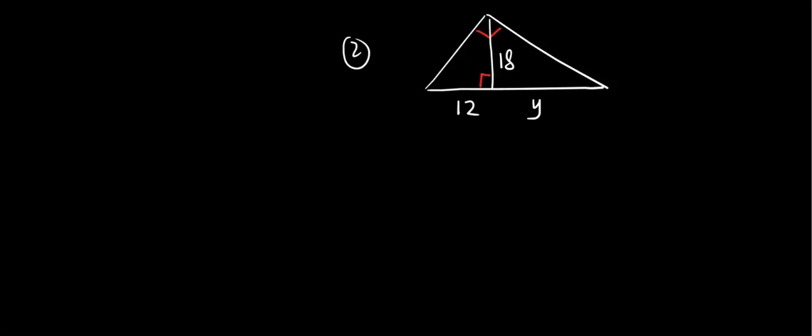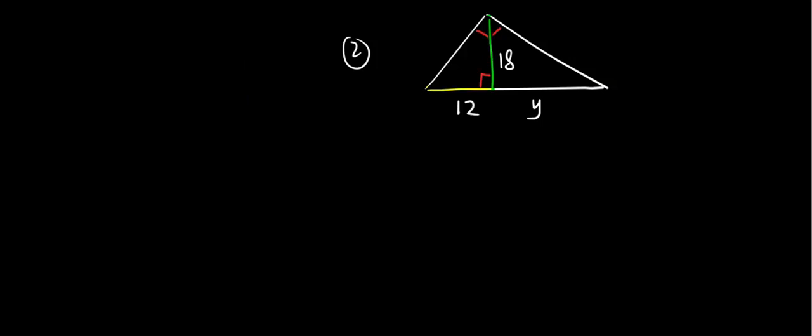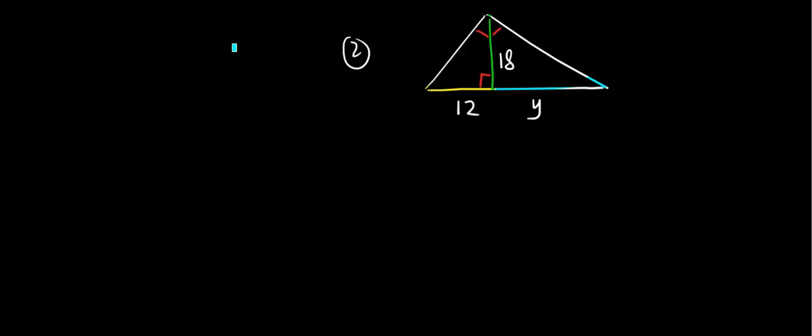We have 18 that is given to us. That is altitude. The altitude divided the hypotenuse into two segments. So we have 12 and a y.